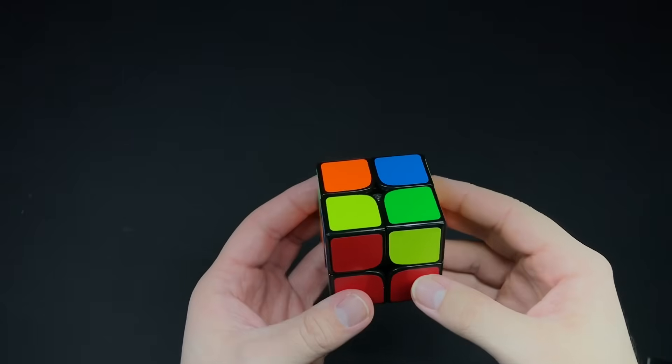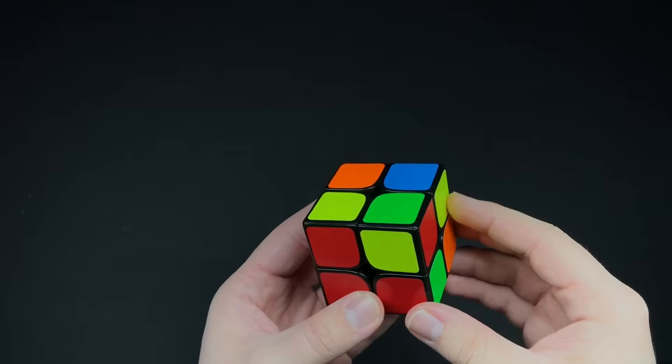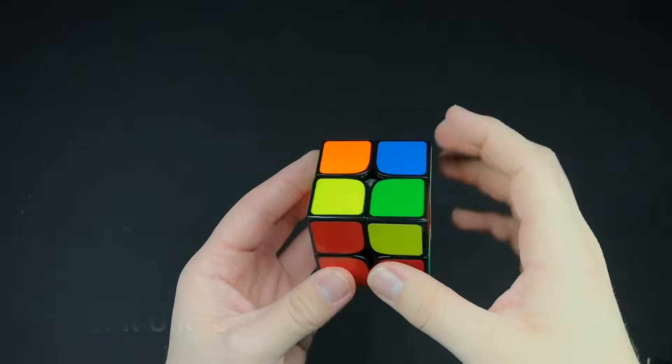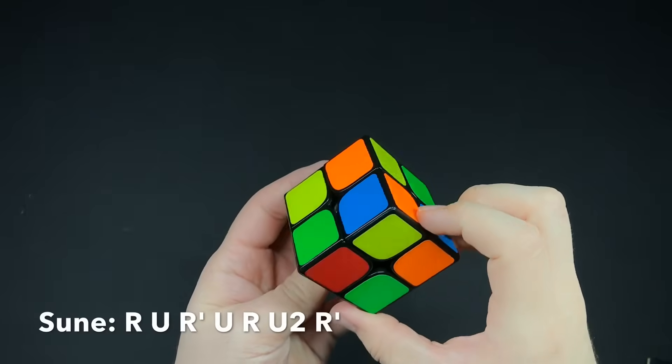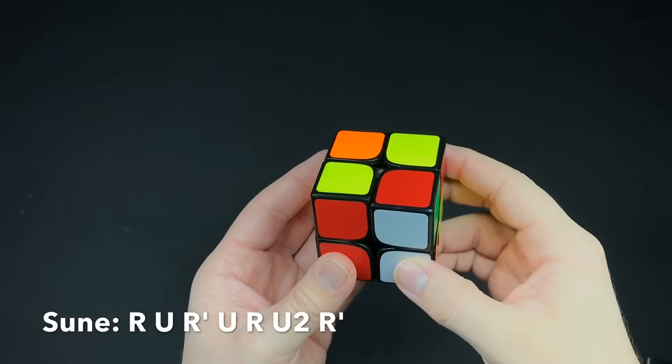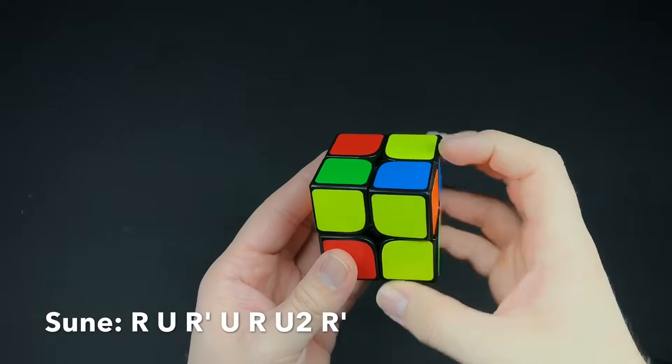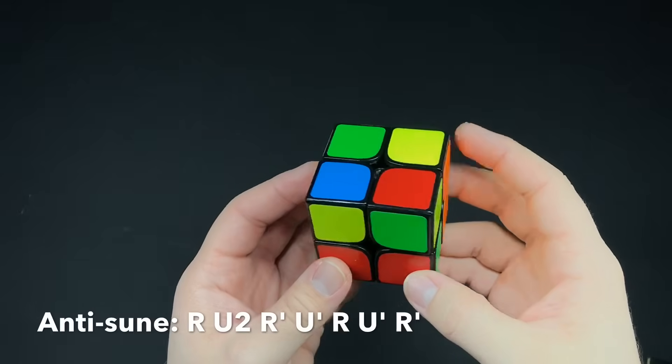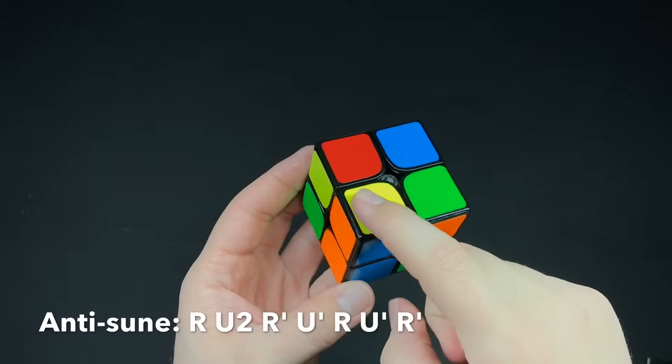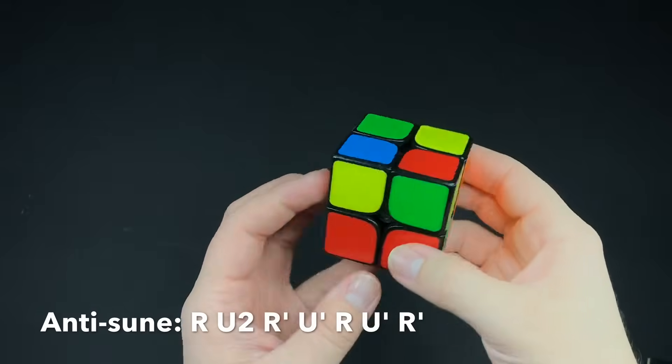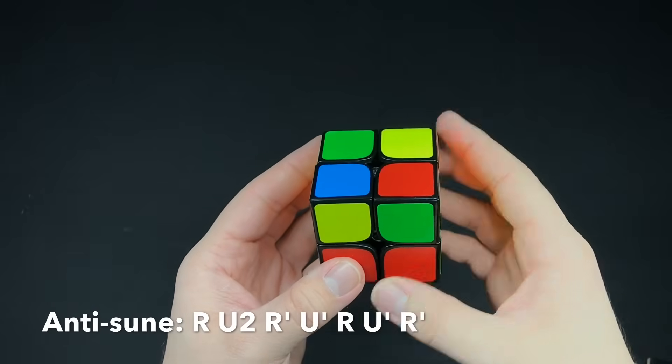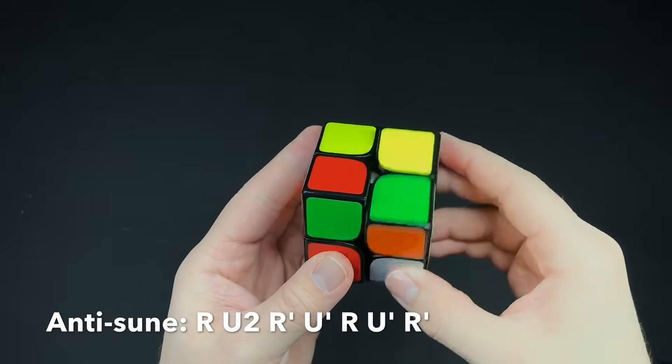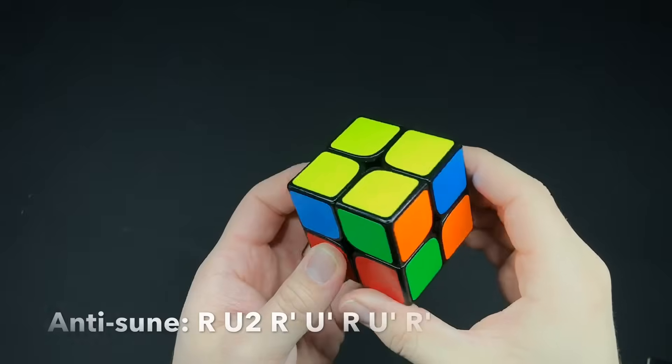If you want to learn all seven cases, I will show them pretty quick. I will put the algorithm on the screen. For this case, this is the anti-Sune. So you have this one, but the front sticker is over here. That'll solve it.